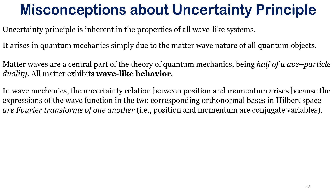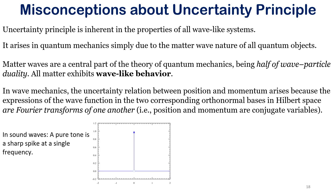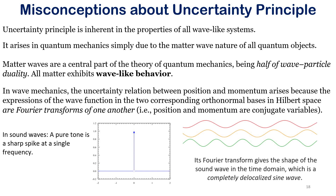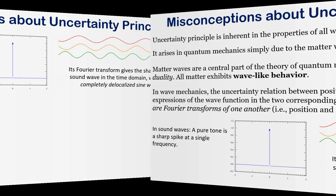In wave mechanics, the uncertainty relation between position and momentum arises because the wave function is expressed in two corresponding orthonormal bases in Hilbert spaces that are Fourier transforms of one another. For example, a pure tone is a very sharp spike at a single frequency. Its Fourier transform gives the shape of the sound wave in the time domain, which is a completely delocalized sine wave — a sharp spike transforms into a delocalized sine wave.